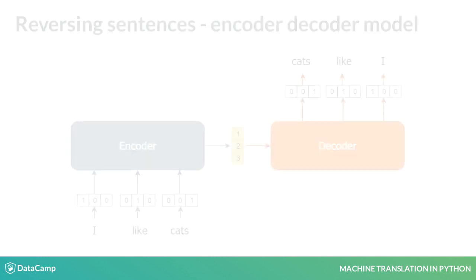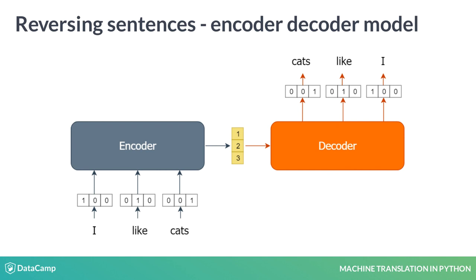To understand the encoder-decoder architecture better, let's implement a simple model that reverses a sentence. First, the encoder receives a one-hot representation of the sentence and converts it to word IDs. Next, the decoder takes in the word IDs, reverses them, and converts the reversed IDs back to the one-hot representation, resulting in the reversed sentence.